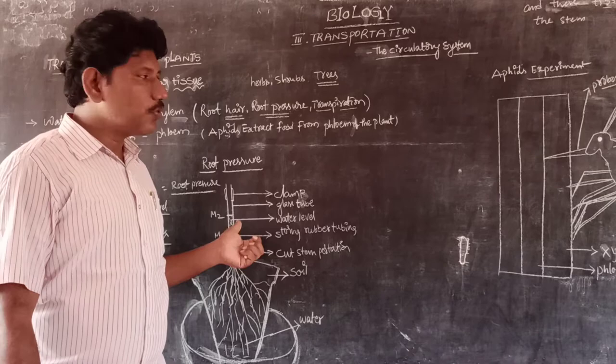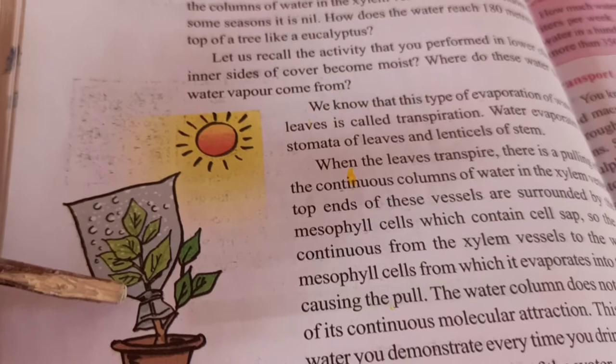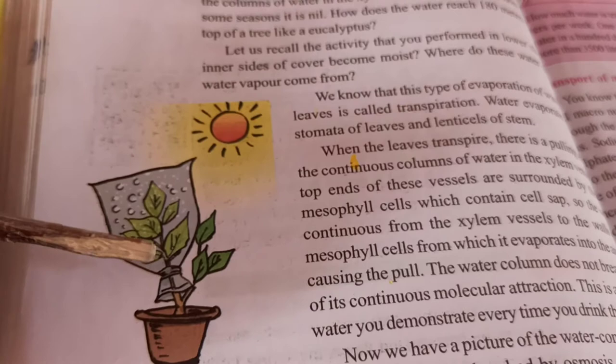To demonstrate transpiration, we can take a polythene cover and tie it over one branch of the plant. We will observe droplets inside the polythene cover — these droplets represent the transpiration process. This was also experienced in the nutrition chapter in 7th class through Van Helmont's experiment.